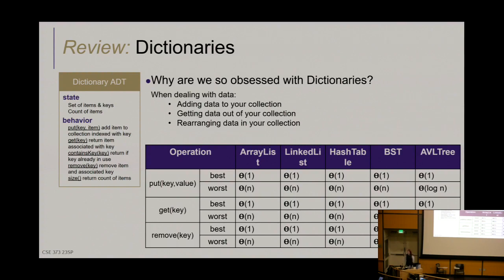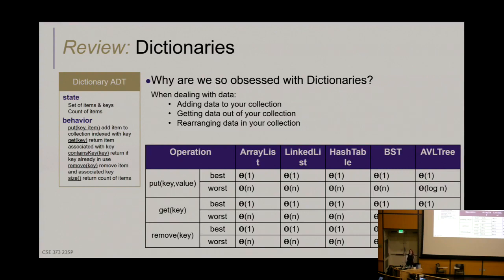Does the order in which you add things to a BST impact its structure? Yes. What order causes a degenerate BST? Ascending values — if you put 1, then 2, then 3, then 4, each value goes to the right of the previous one because a BST doesn't self-balance. Same goes for descending order. That's why we became obsessed with balanced trees and that's where AVL comes in.